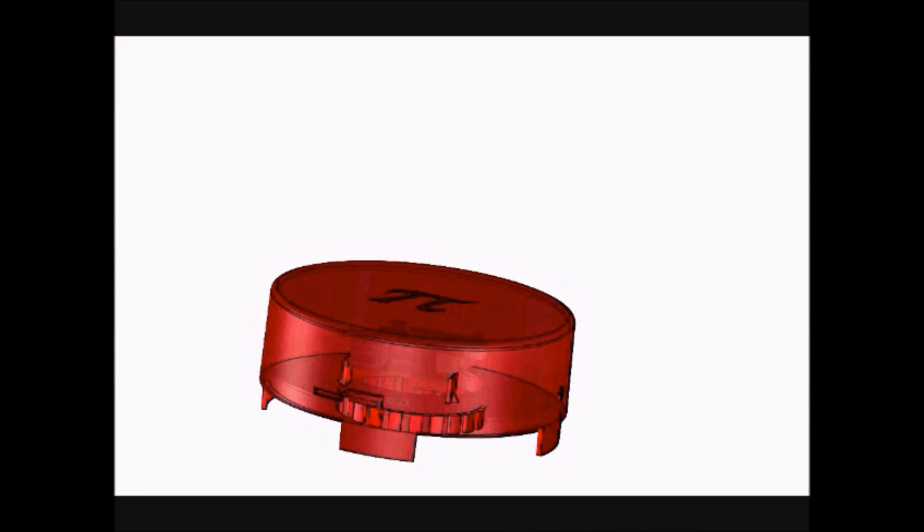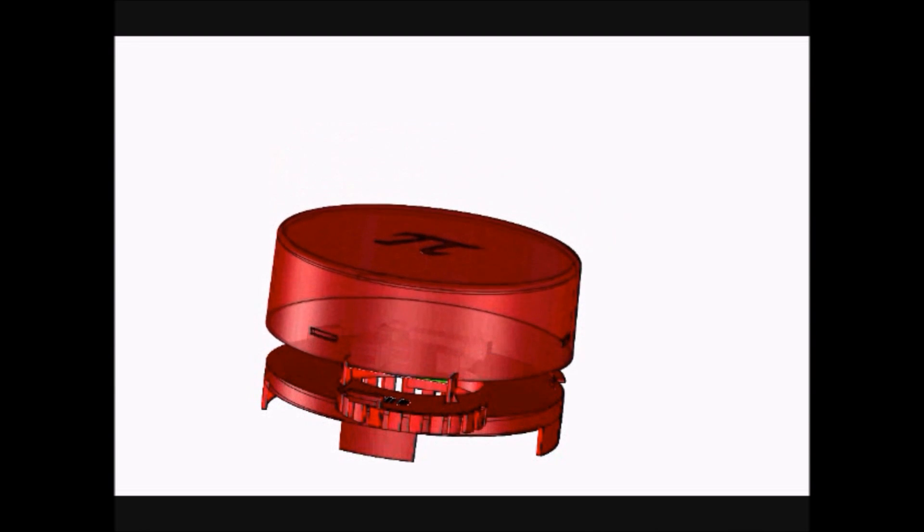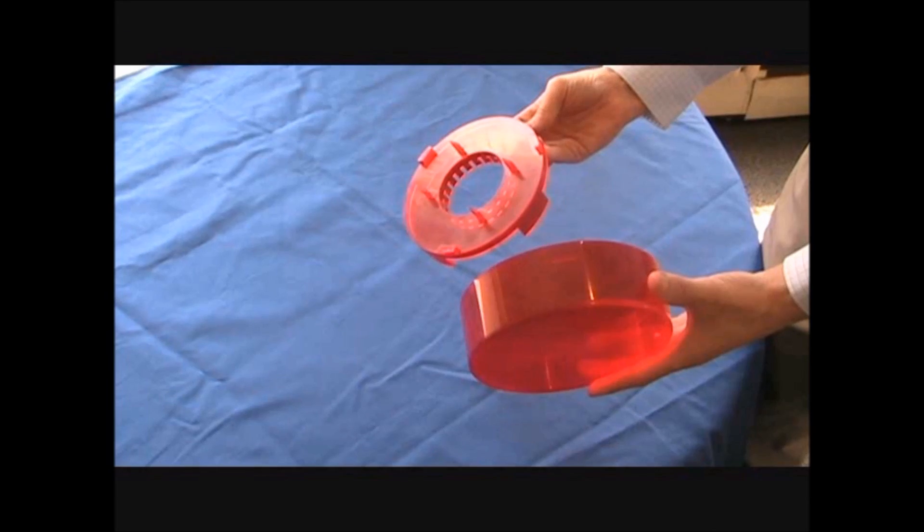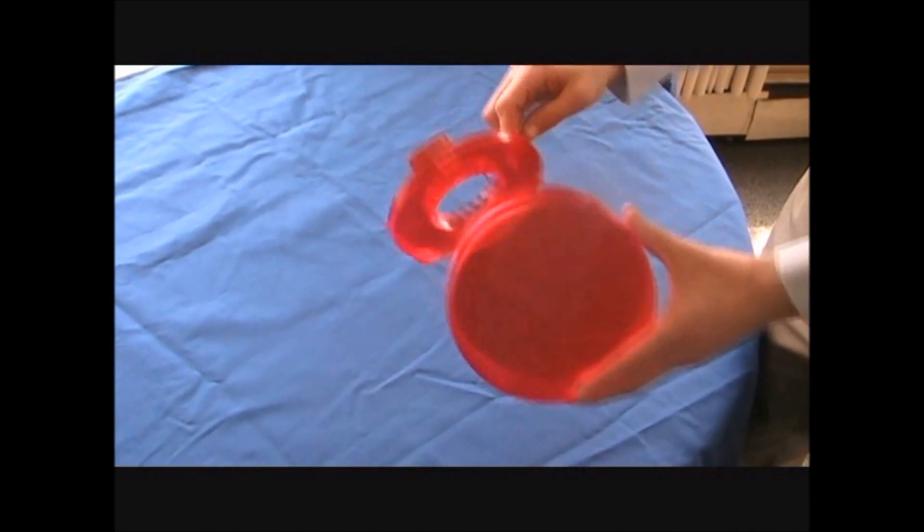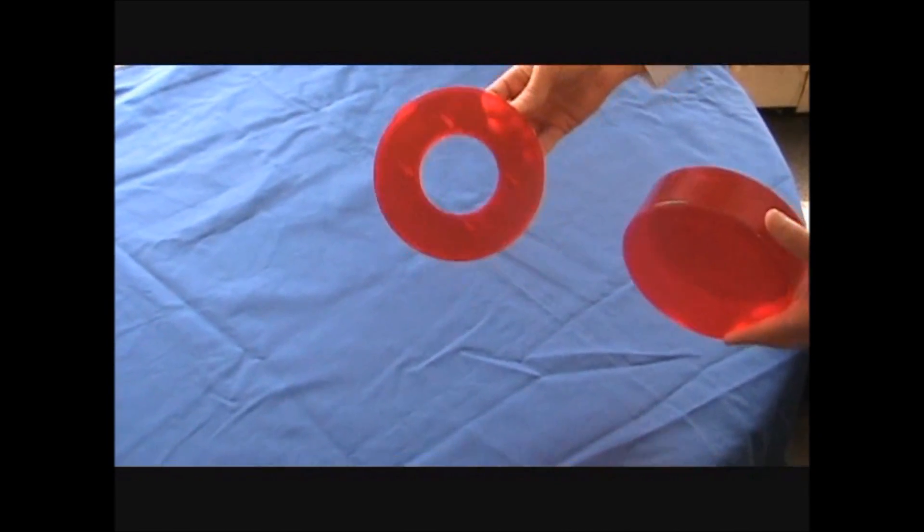The base has mounting clips for locating the board and also has a large opening for cable access. This allows the cable to snake through the base and onto the board without restrictive holes in the side of the enclosure.